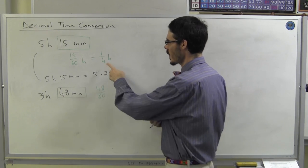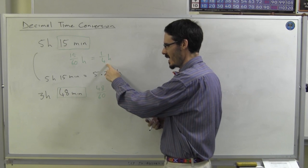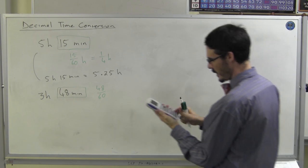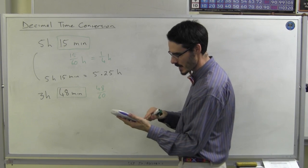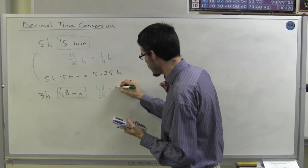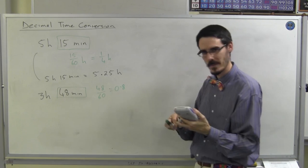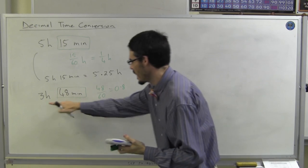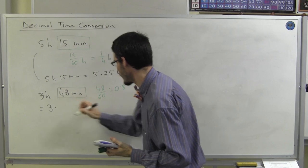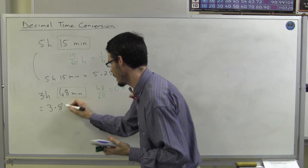But 48 out of 60. How am I going to make that a decimal? Again, you can look for a simplified fraction, but you can actually just get your calculator and ask your calculator for 48 divided by 60. And it says that is 0.8. Which means 3 hours 48 minutes is 3.8 hours.